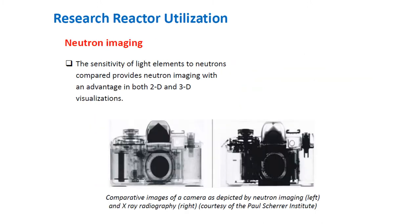The sensitivity of light elements to neutron absorption compared with X-ray imaging provides neutron imaging with an advantage in both 2D and 3D visualizations. Until the 1990s, the dominant detection systems for neutron imaging were film-based. Since then, detection methods have been drastically improved and digital processing systems introduced. In this figure, you can compare images formed by neutron imaging and X-ray radiography — you can see more components inside a camera with neutron imaging than with X-ray radiography.